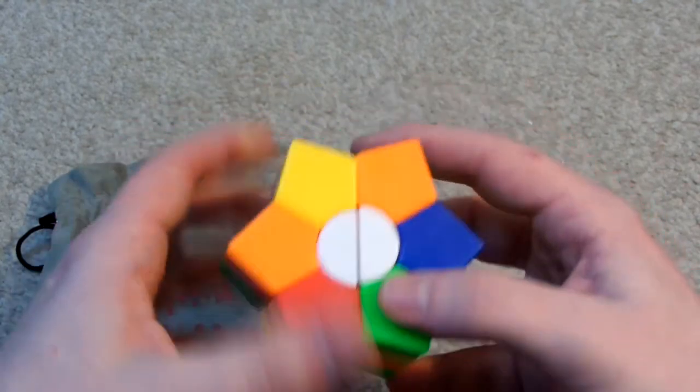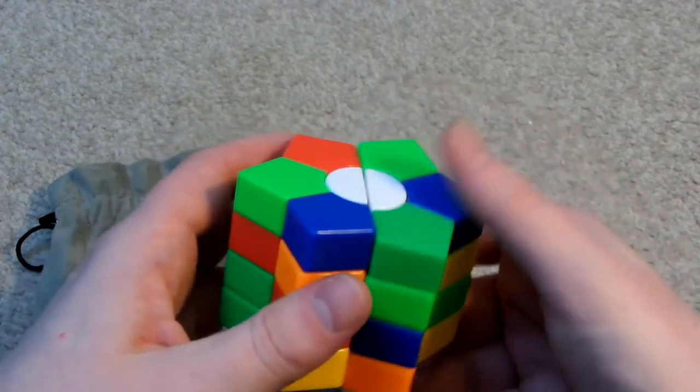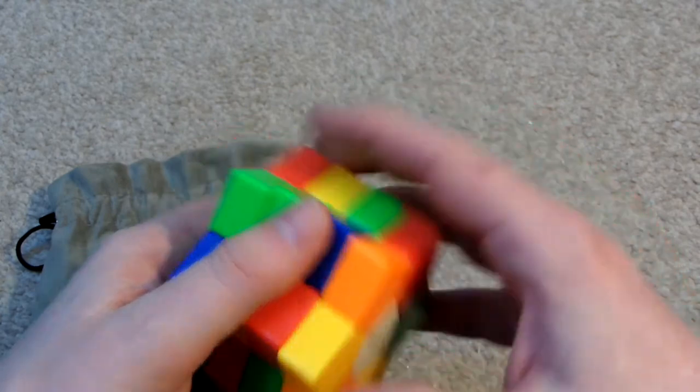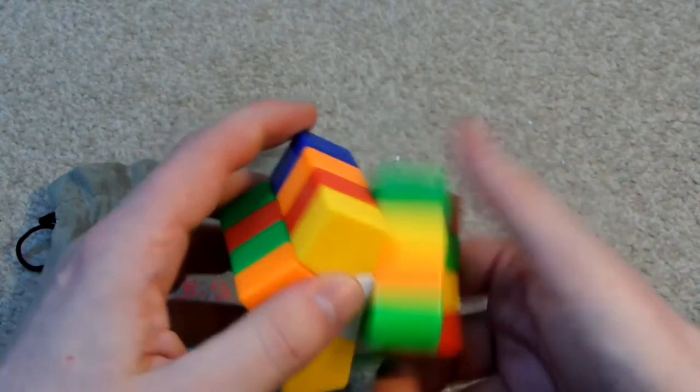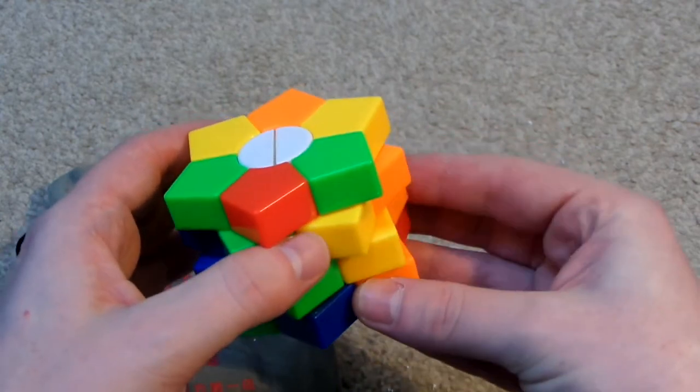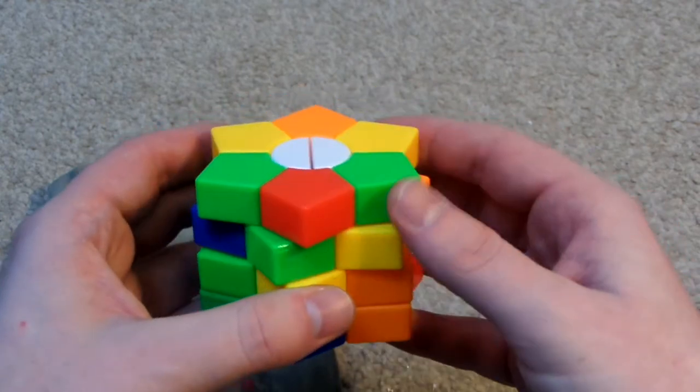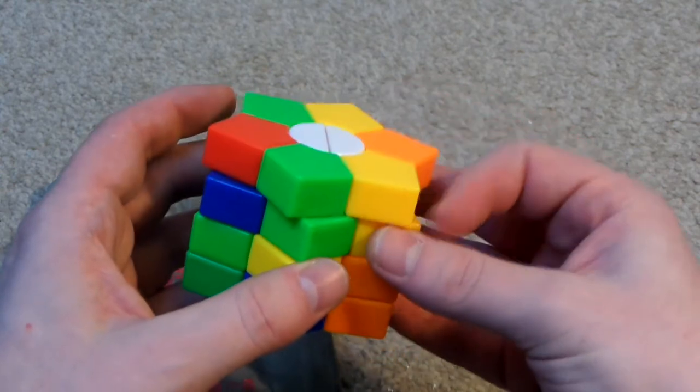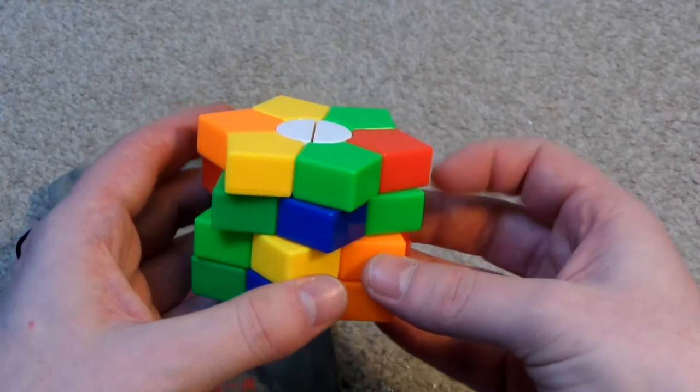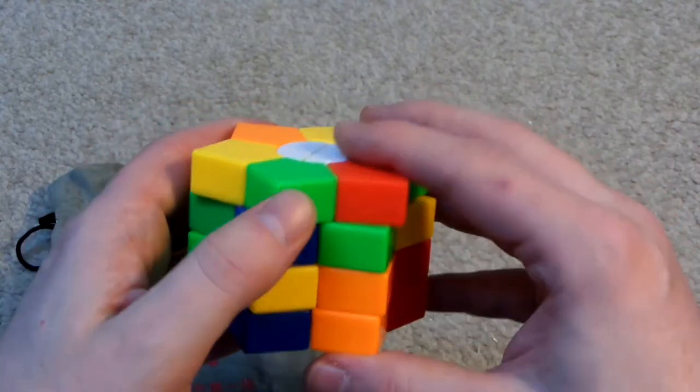Yeah I mean this turns so much better than the MF8 super square one puzzles. The MF8 ones, they're always getting stuck. And like the layers don't, they don't feel equal if you know what I mean. Like the tensions on them don't feel equal. So like the top layer might be really loose. And then the next layer might feel really stiff. Whereas on this one they all feel pretty much equal.